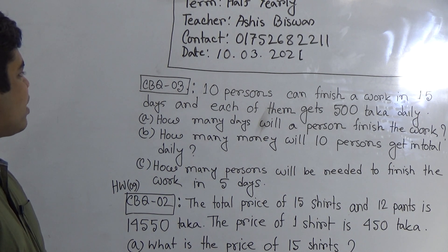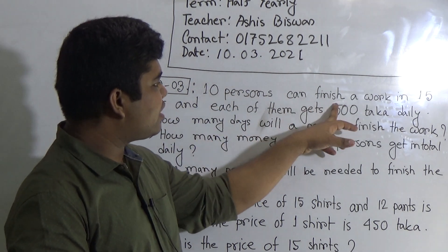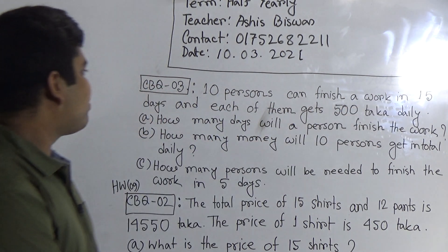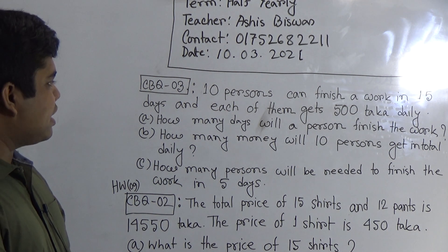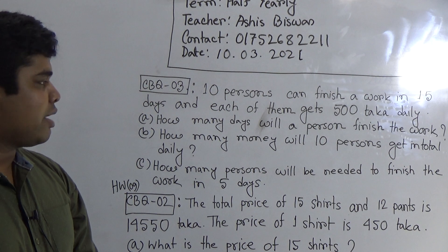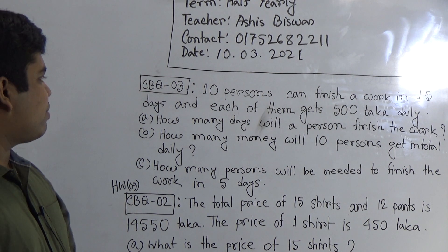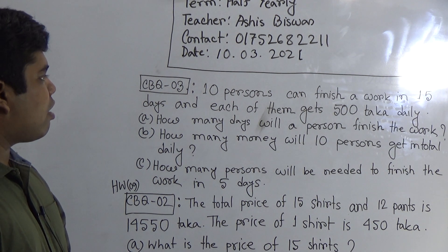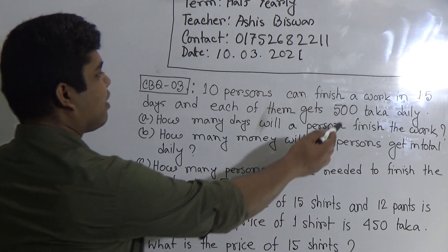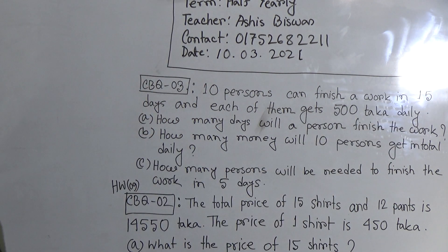My dear students, at first we read CBQ number 3. The problem: 10 persons can finish a work in 15 days, and each of them gets 500 taka daily. Two pieces of information are given, and by using this information we shall solve questions a, b, and c.